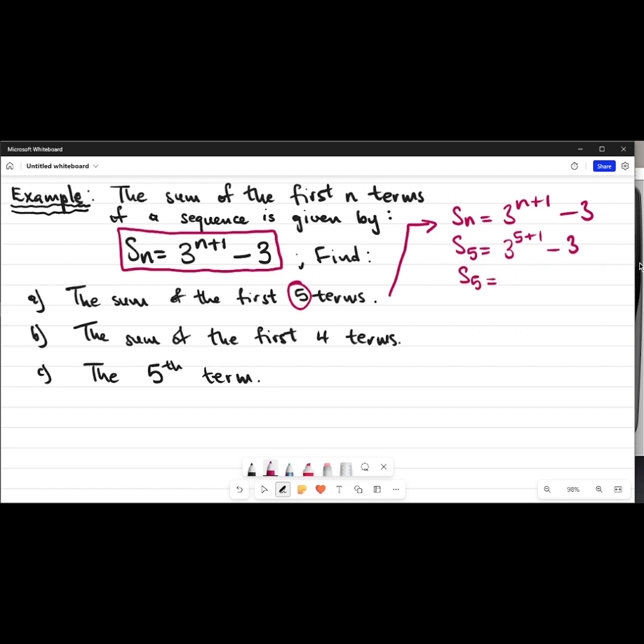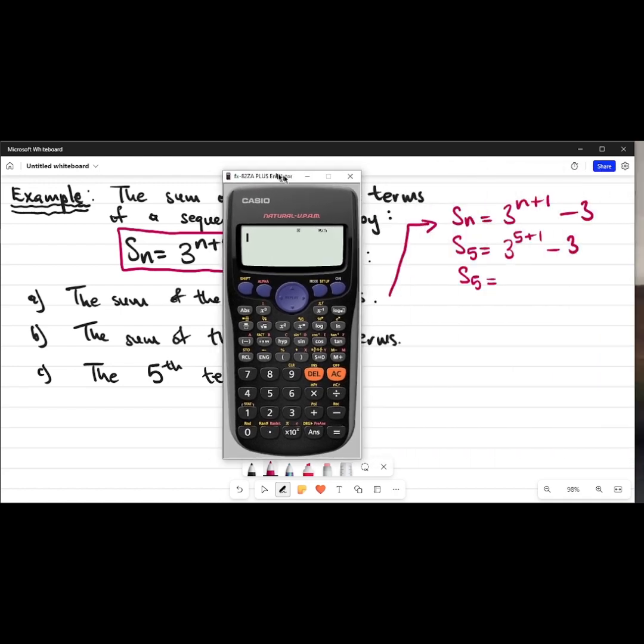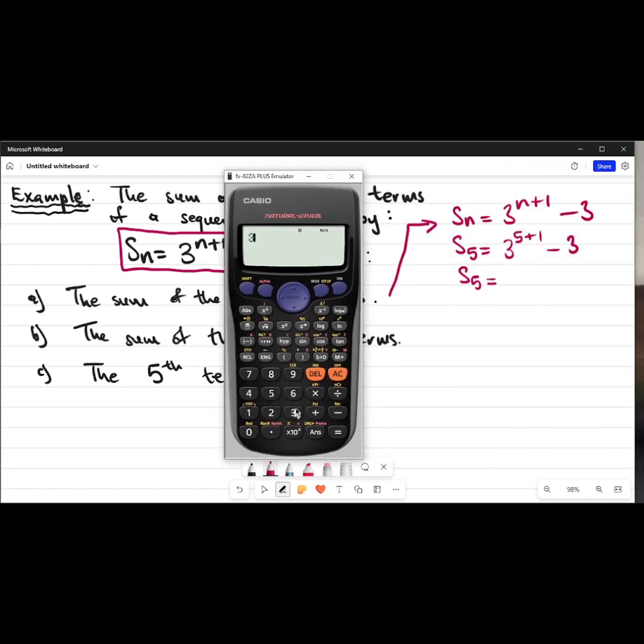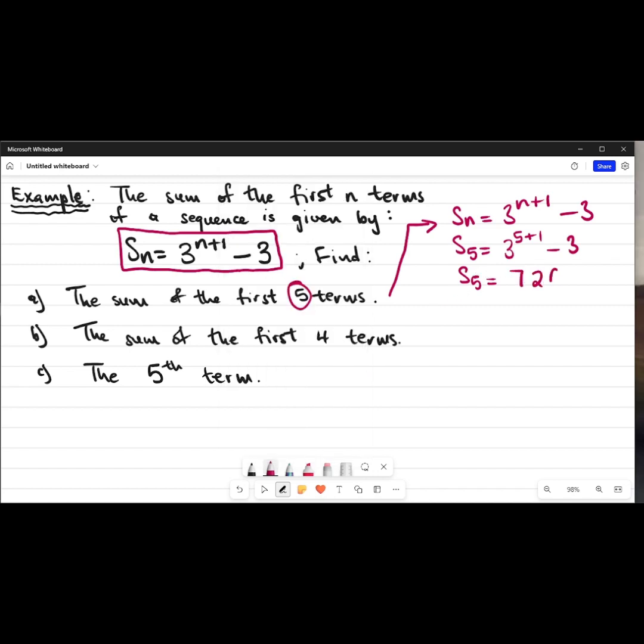So I'll just punch everything in the calculator, which would give me 726. So the first 5 terms of this series would be 726 when we add all of them together.